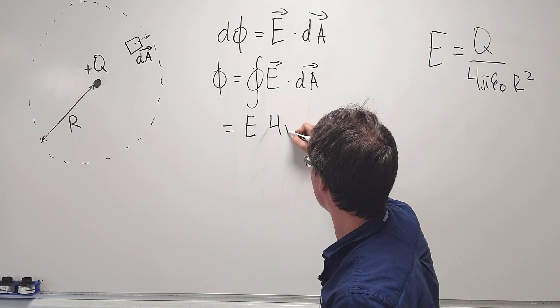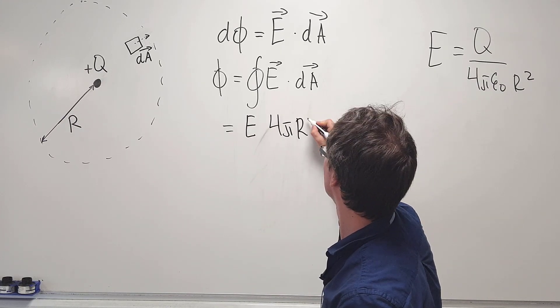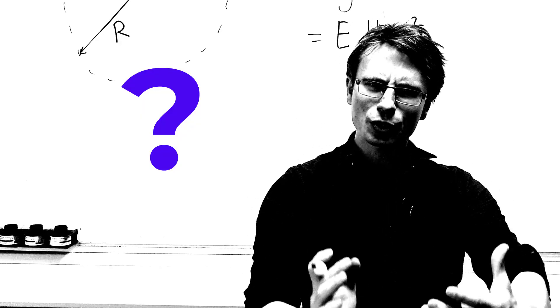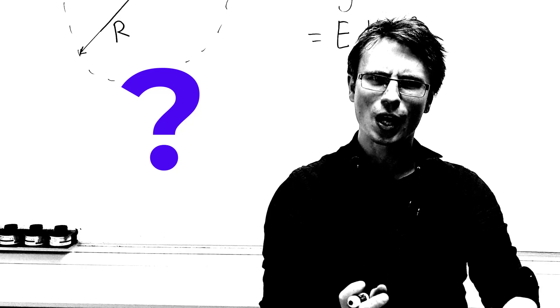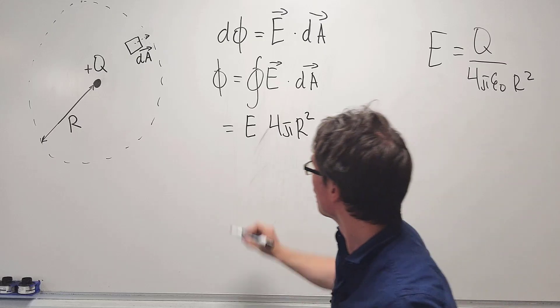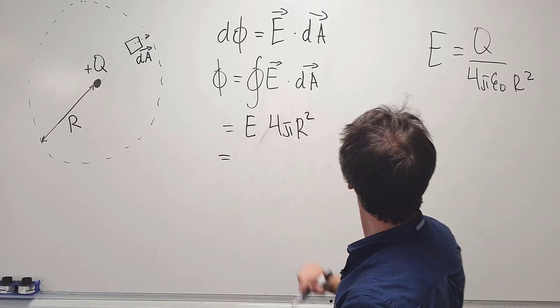If only I had an equation for the electric field due to a point charge. Oh, hang on a minute. There it is. E is equal to Q over 4πε₀r². So I can just substitute this into this expression.